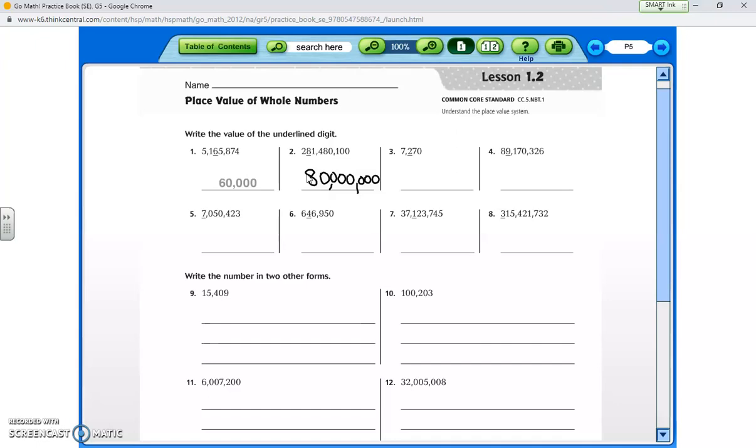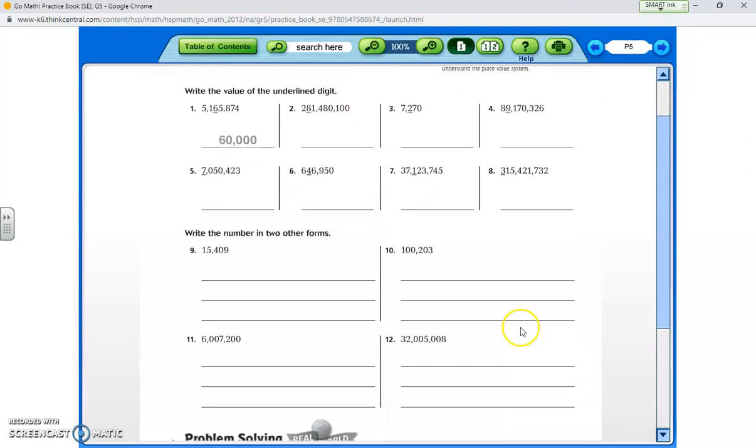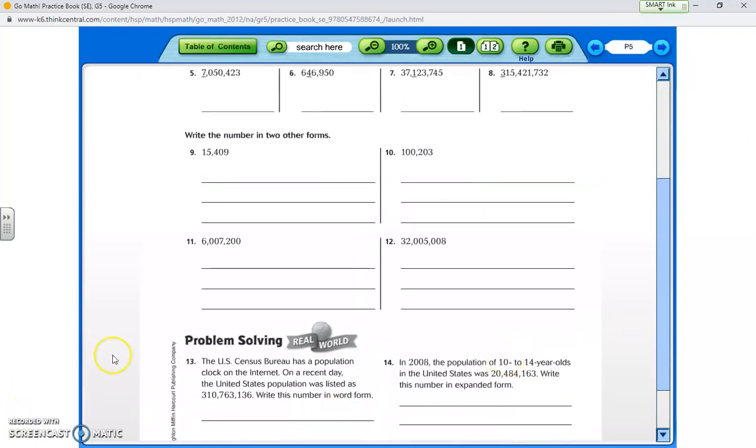For the next few problems, they're asking us to write it in two other forms. All four of these problems are giving you the number in standard form. The two other forms. Can someone tell me the other form we would need? Danny? We have word form. And the next one. Fidel? Right. As it gets bigger, it's expanded form.